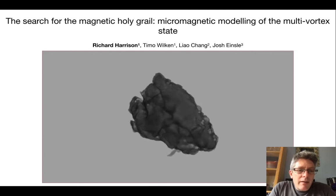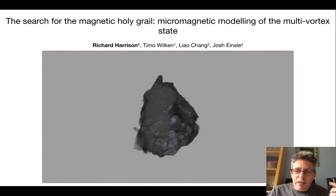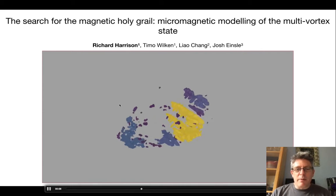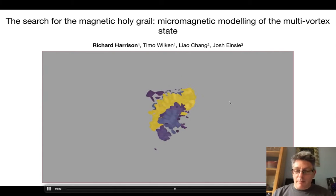Hello. In this poster, I'd like to present some work in progress towards tackling what I think is the holy grail of rock magnetism, which is the micromagnetic modelling of the multi-vortex state in particles that have complex and realistic geometries, such as shown here in this particle, a detrital particle from a marine sediment that contains dendritic inclusions of magnetite.